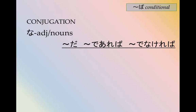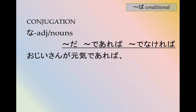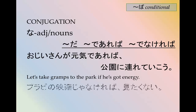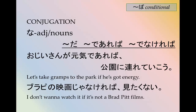Nouns and な adjectives can also be made into the ば form. Think of だ as a short form of である, so the form would be であれば or でなければ. For example, おじいさんが元気であれば、公園に連れていこう — let's take grandpa to the park if he's got energy. ブラピの映画じゃなければ、見たくない — if it's not a Brad Pitt film, I don't want to watch it.